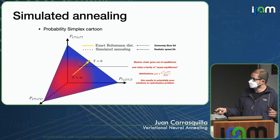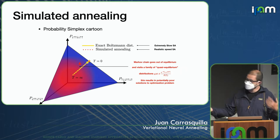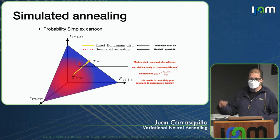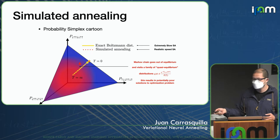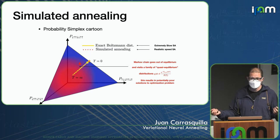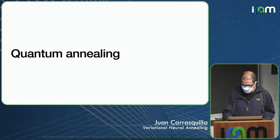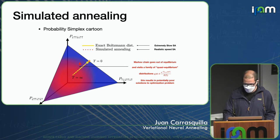The problem is that in practice the Markov chain goes out of equilibrium because you have to anneal at a finite rate. This results in potentially poor solutions to challenging optimization problems. That's the key limitation of simulated annealing.